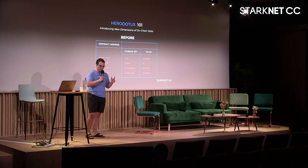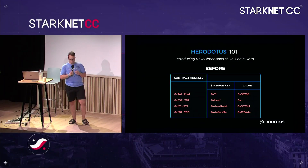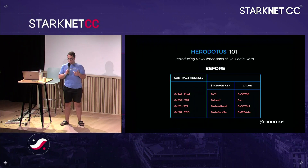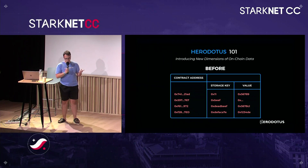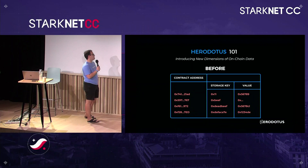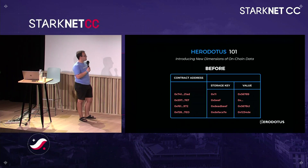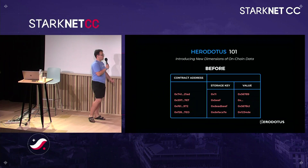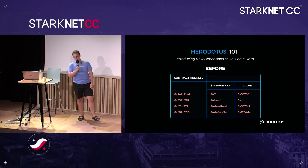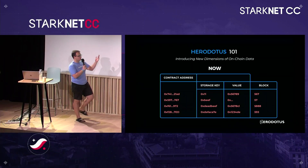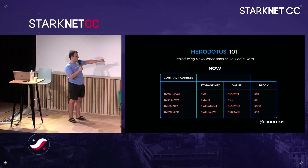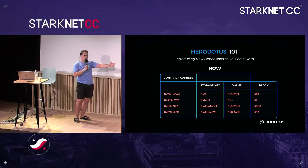Let's talk about what we actually do. I like to say that we unify space and time. Let's talk about the temporal dimension first. I like to think of Ethereum and blockchains — especially stateful blockchains — as just a database, where everything can be represented as a table. This table has three columns: the contract address, some storage key, and some value. Something is missing, and it's putting a lot of constraints on the type of applications we can build. What if this table had a fourth column, where you could say: I want this from this contract at this point in time?